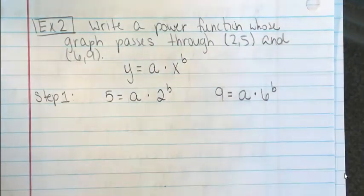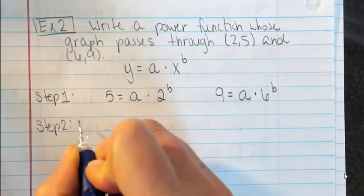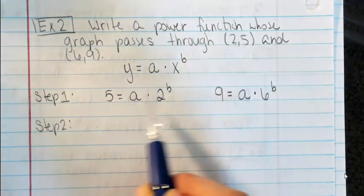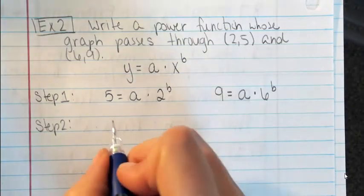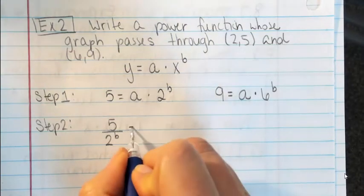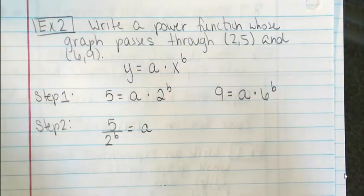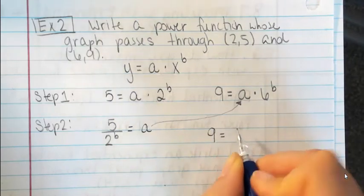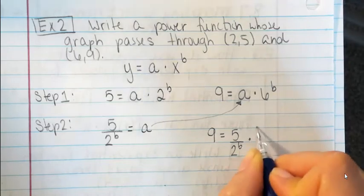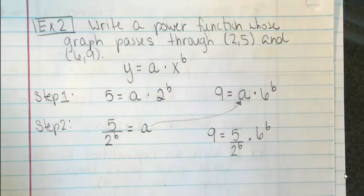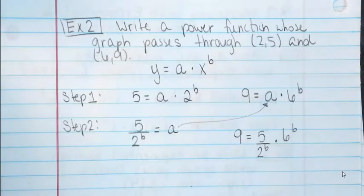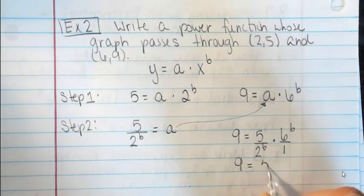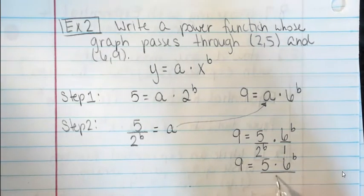Step two: use substitution. I'm going to solve either one of these for a. Starting with the first equation: a equals 5 divided by 2 to the b power. Now I'll take this a and plug it into the other equation. So I get 9 equals (5 over 2 to the b) times 6 to the b. Let me rewrite this: 9 equals 5 times 6 to the b power over 2 to the b power.